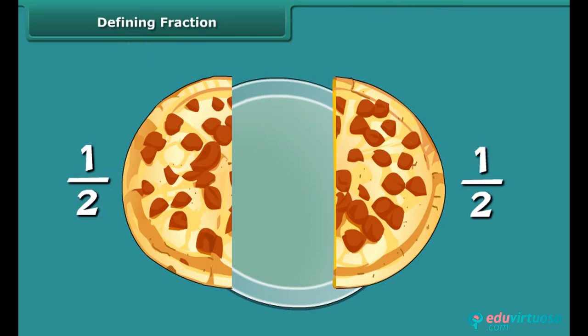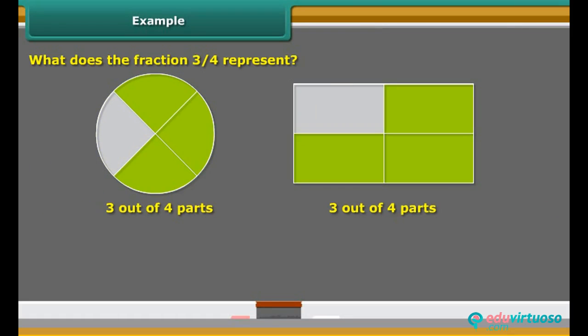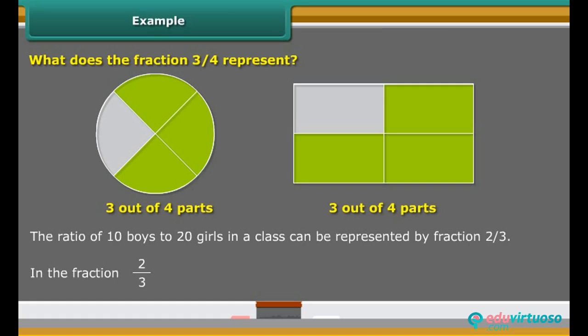For example, Ravi divides a pizza into two parts. What does the fraction 3 upon 4 represent? It represents 3 out of 4 parts. The shaded part of each figure below represents 3 upon 4 of the entire figure. The ratio of 10 boys to 20 girls in a class can be represented by fraction 2 upon 3. In the fraction 2 upon 3, number 2 is called the numerator of the fraction and number 3 is called the denominator of the fraction.